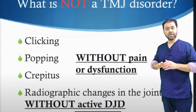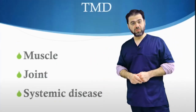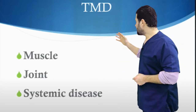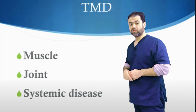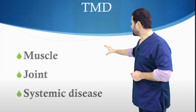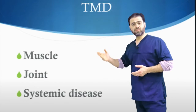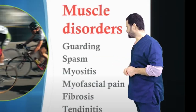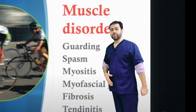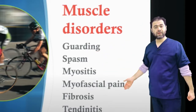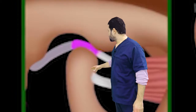What types of TMJ disorders do we have? We have disorders involving the muscles of mastication, disorders involving the joint itself, or disorders as part of systemic conditions — like any muscles in the body, we can have muscle ache, restriction of movement, and some kind of fibrosis.